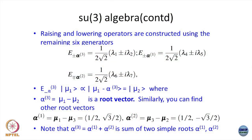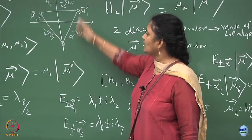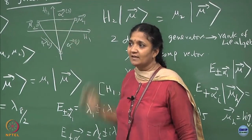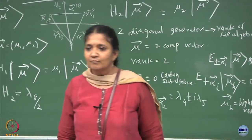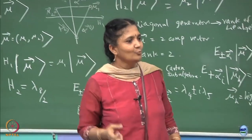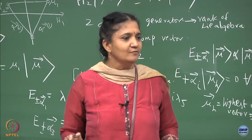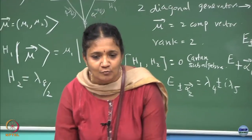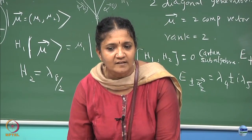Some more subtlety here: alpha 1 is this difference, alpha 2 is this difference. What we see is that alpha 3, which I started with mu 1 minus mu 2 on the board, is actually a linear combination of alpha 1 plus alpha 2. That is also clear from this diagram — you can do alpha 1 and then alpha 2 and you can get alpha 3. Since you can generate alpha 3 using the other two vectors, you call this to be just a positive root, whereas alpha 1 and alpha 2 are the simple roots.